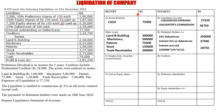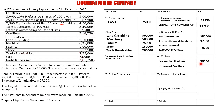Next comes creditors. Creditors given in the question total 3,18,750. There is an adjustment that creditors include preferential creditors of 38,000. So under creditors, we first pay preferential creditors: 38,000. The remaining amount becomes unsecured creditors: 3,18,750 minus 38,000 equals 2,80,750.